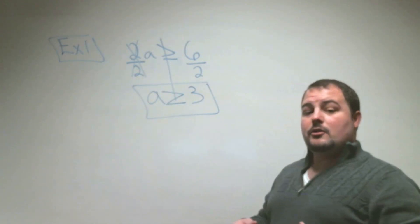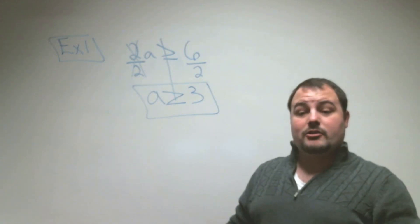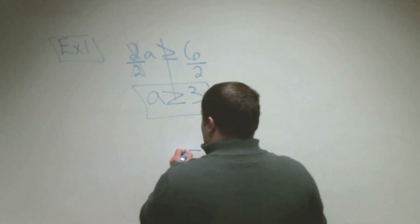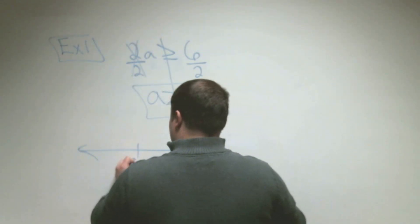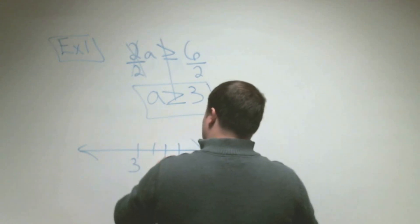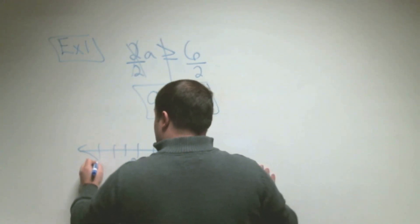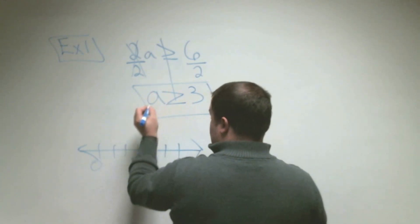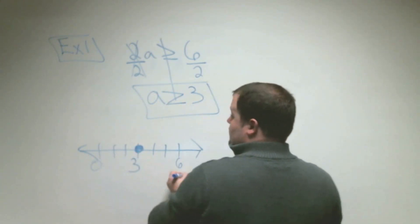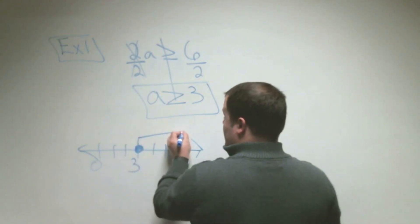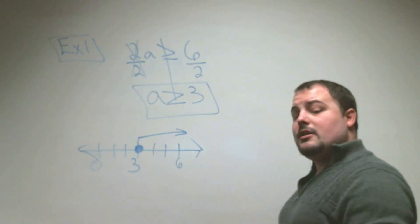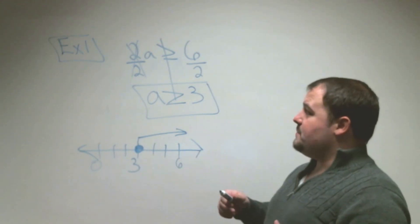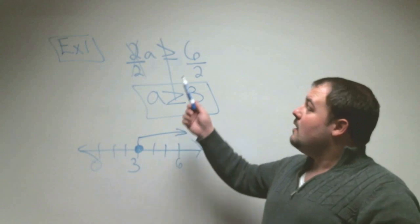You could use the same skills from the previous lesson to graph this. You would draw a number line, put 3 in the middle, count up and down. The symbol is greater than or equal to, so that's a closed circle pointing right. Anything to the right of 3 makes the statement true — as long as the number is bigger than or equal to 3, we'll get a result bigger than or equal to 6.